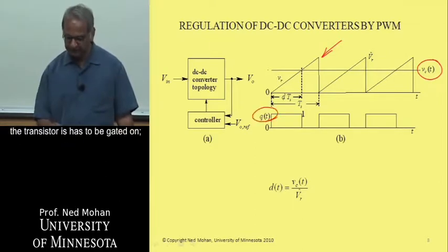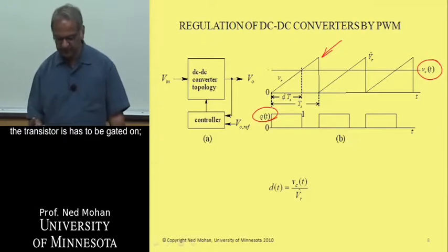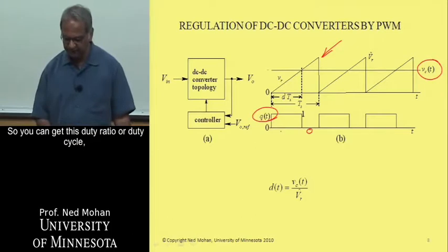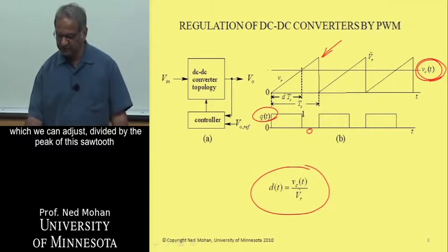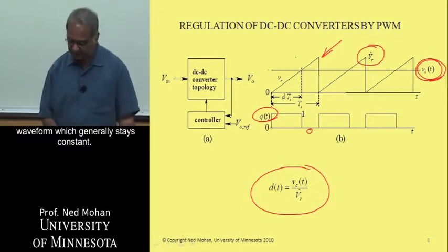Otherwise, it's to be gated off here. So we can get this duty ratio or duty cycle, which is essentially the ratio of this control voltage, which we can adjust, divided by the peak of this sawtooth waveform, which generally stays constant.